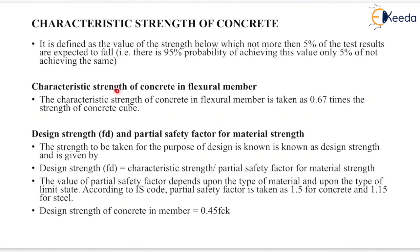Now, characteristic strength of concrete in a flexural member. The characteristic strength of concrete in a flexural member is taken as 0.67 times the strength of the concrete cube. The strength to be taken for the purpose of design is known as design strength and is given by characteristic strength divided by the partial safety factor for material strength.